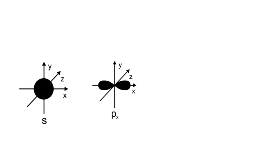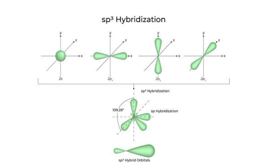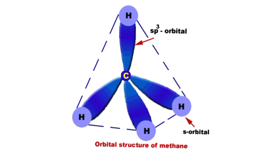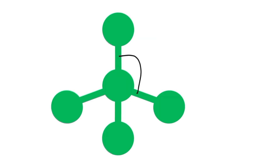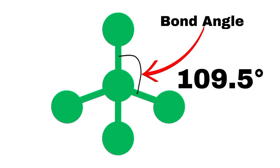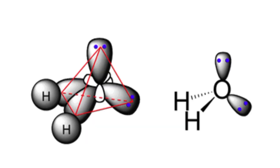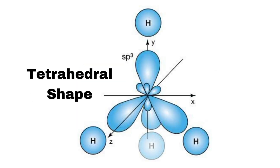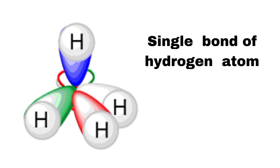In sp3 hybridization, one s orbital mixes with three p orbitals to form four equivalent sp3 hybrid orbitals. The four sp3 hybrid orbitals arrange themselves in a tetrahedral geometry with bond angles of 109.5 degrees. In methane, the carbon atom is sp3 hybridized, resulting in a tetrahedral shape where each sp3 orbital forms a sigma bond with a hydrogen atom.